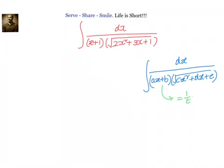Here our ax plus b equals x plus 1. So let x plus 1 equal to 1 by t. Now let us differentiate. We have dx equal to minus 1 by t squared dt.